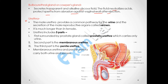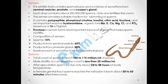The urethra has three parts. The first is the prostatic urethra, surrounded by the prostate gland, which carries urine only. The second is the membranous urethra, which carries both urine and sperm. The third is the penile urethra, surrounded by the penis, which also carries both urine and sperm.